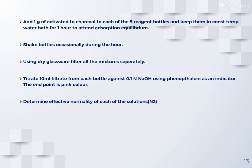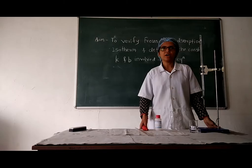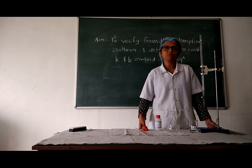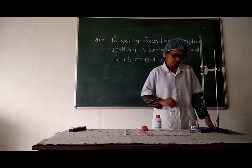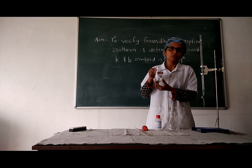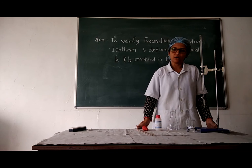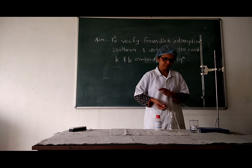Now we will see how to actually perform this experiment to verify the Freundlich adsorption isotherm and determine K and V values. First, prepare the 0.5 normal acetic acid and verify its normality by titrating it against 0.1 normal sodium hydroxide. Take 10 ml of the prepared acetic acid into a conical flask.